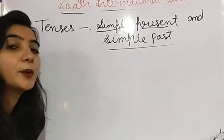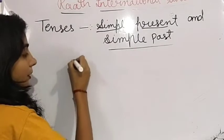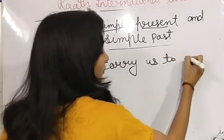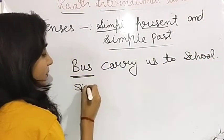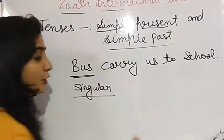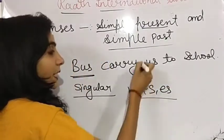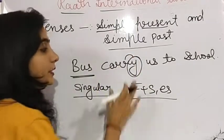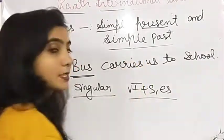Another example: 'हमारी bus हमें school ले जाती है' — Bus carries us to school. 'Bus' is a singular subject, so we use verb first form with S or ES. The verb 'carry' ends in Y with a consonant before it, so we remove Y and add IES: carries.